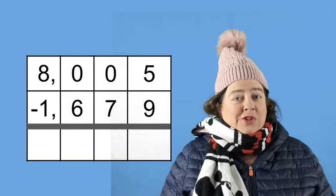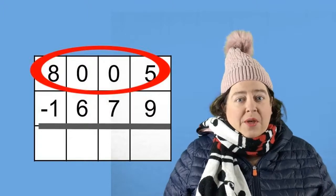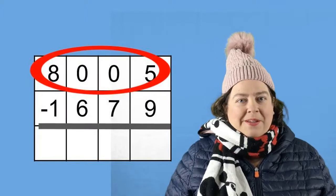Today's math problem that I'm going to show you how to do is 8005 minus 1679. So do you remember what the first thing we're going to do is? That's right! We're going to make sure that we have the largest number on the top. In this case we circled 8005. That is the largest number. It is greater than 1679. So it belongs on top. Good job boys and girls! We've done our first step.